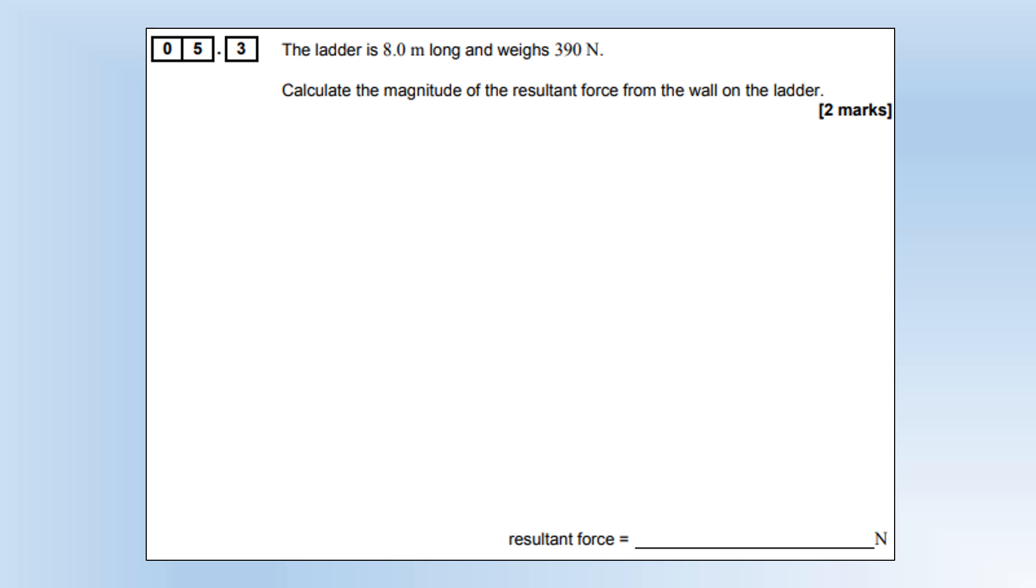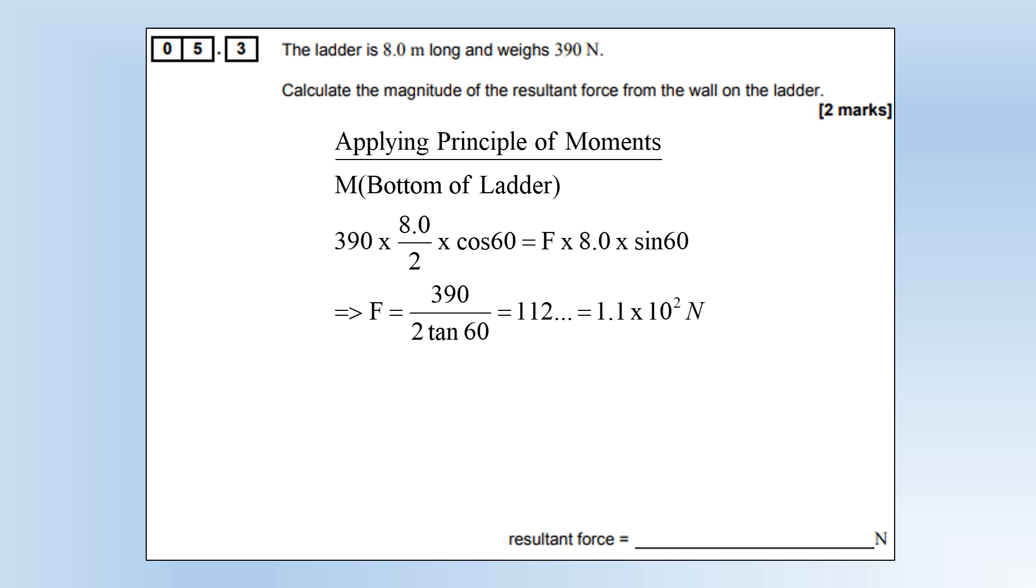The ladder is 8 meters long and weighs 390 newtons. Calculate the magnitude of the resultant force from the wall on the ladder. I'm going to use the principle of moments, and I'm going to take moments about the bottom of the ladder since I don't know the direction or the size of that force. The weight force of the ladder acts halfway along its length, but we need to multiply that by cos(60) to make the distance perpendicular to the force. We're going to do a similar kind of thing with the force from the wall: we know it's going to act along the full length of the ladder, but again we need to turn that into a perpendicular distance. We can then rearrange and solve for F as 112 newtons.